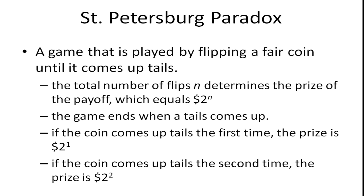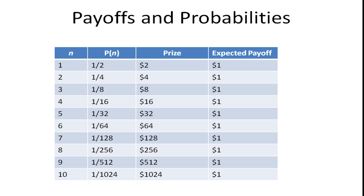The game ends when a tails comes up. So if the coin comes up tails the first time, the prize is two dollars raised to the first power, or two dollars. If the coin comes up tails the second time, the prize is two dollars raised to the second power, which is four dollars, etc.